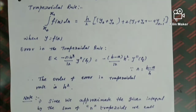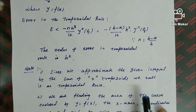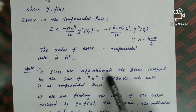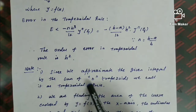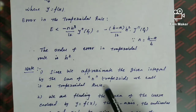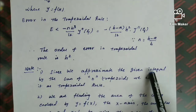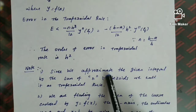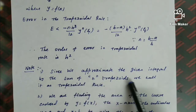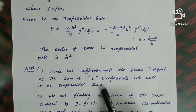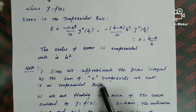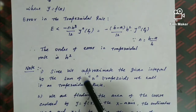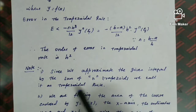Note 1: Since we approximate the given integral by the sum of n trapezoids, we call it the Trapezoidal Rule. So the reason why it is called the Trapezoidal Rule is that the given integration value is approximated by the sum of n trapezoids. This answers the question: why is the trapezoidal rule so called?